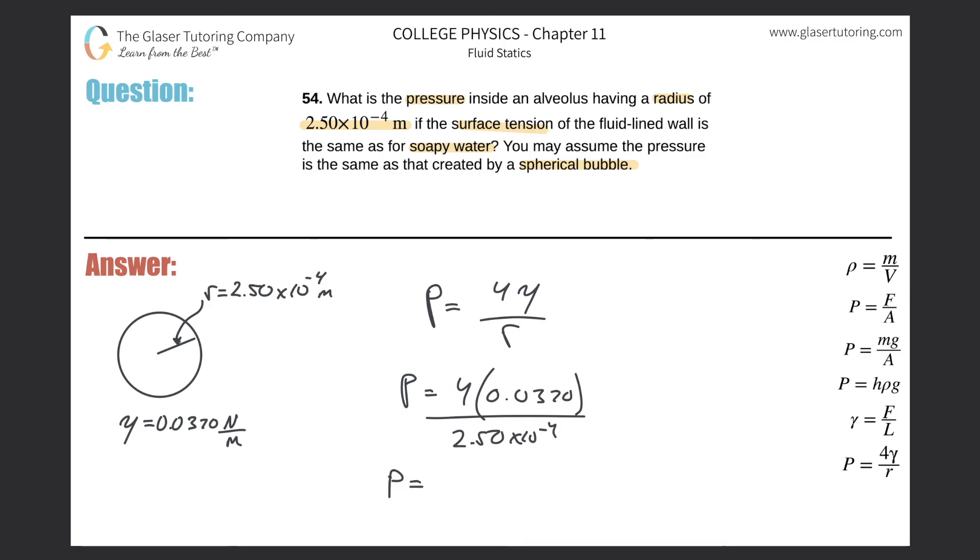And here we now have the pressure is going to be simply 4 times 0.037 divided by 2.5 times 10 to the minus 4th. And we get a value of about 592. And that's 592 Pascal.